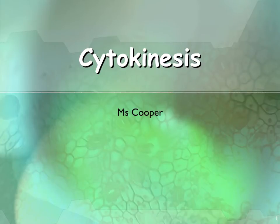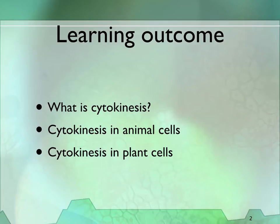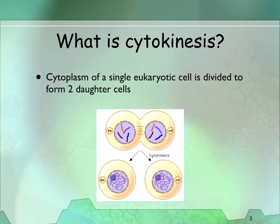In this topic, we're going to have a look at cytokinesis — what it is, and how it occurs in animal cells and plant cells. Cytokinesis is the process in which the cytoplasm of a single eukaryotic cell is divided to form two daughter cells, and it usually initiates in the late stages of mitosis.